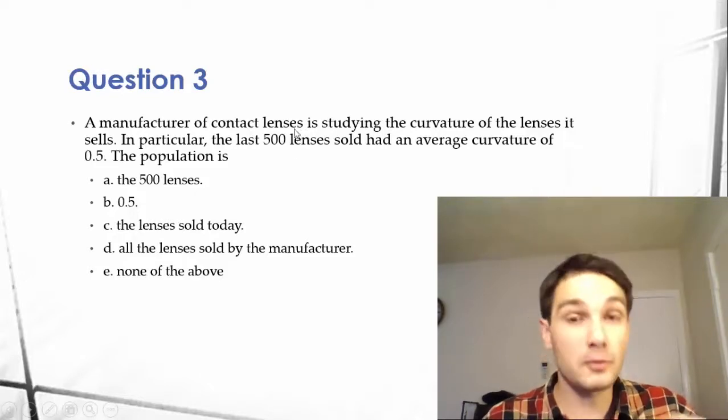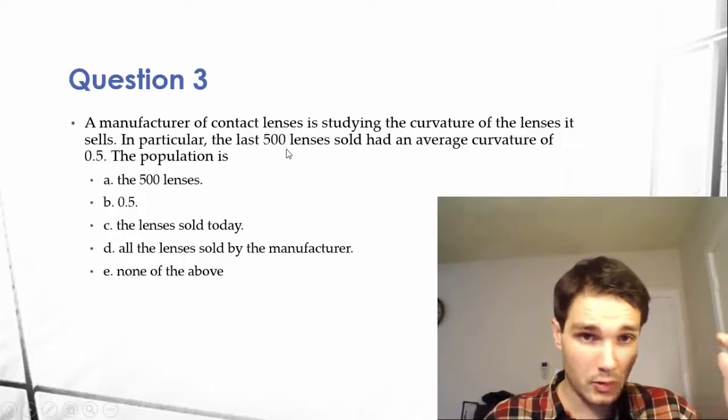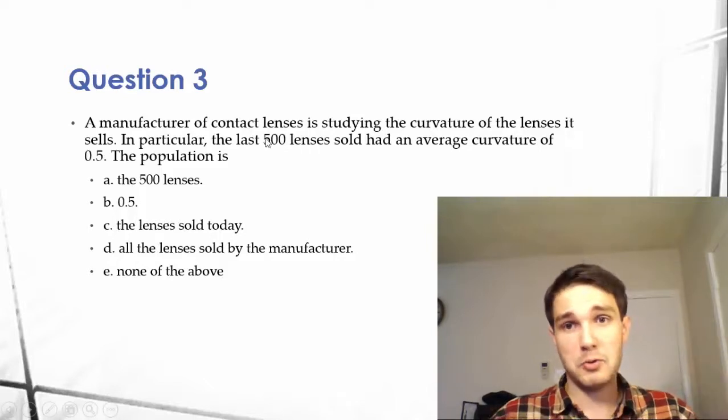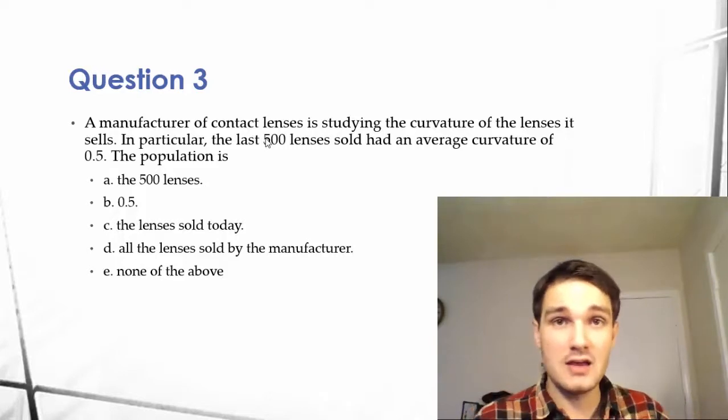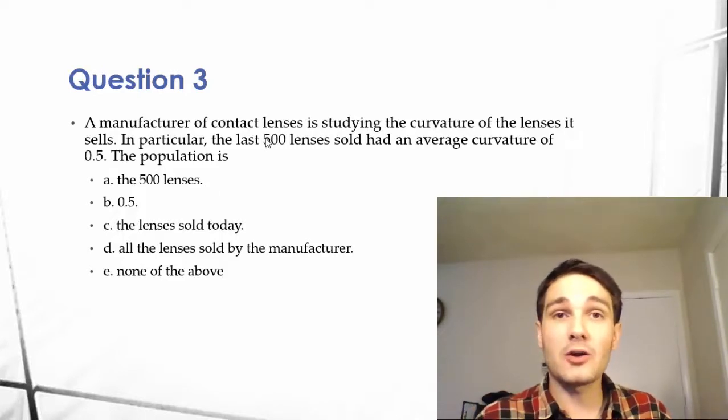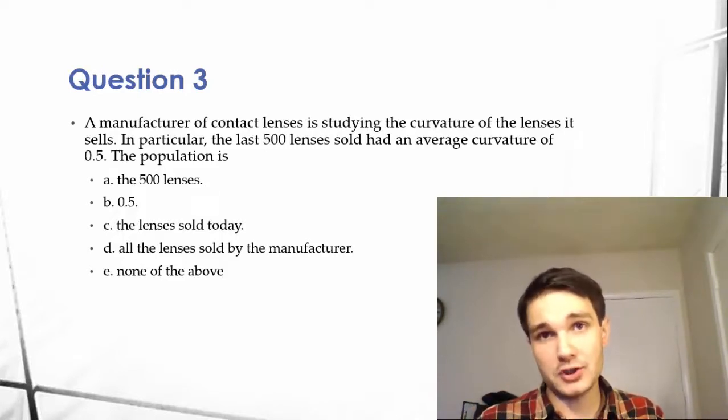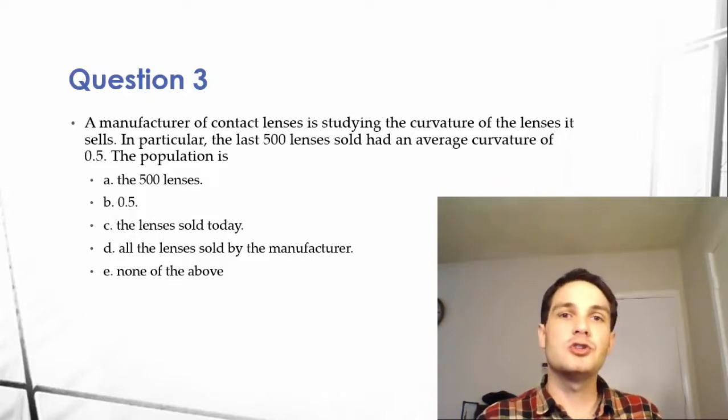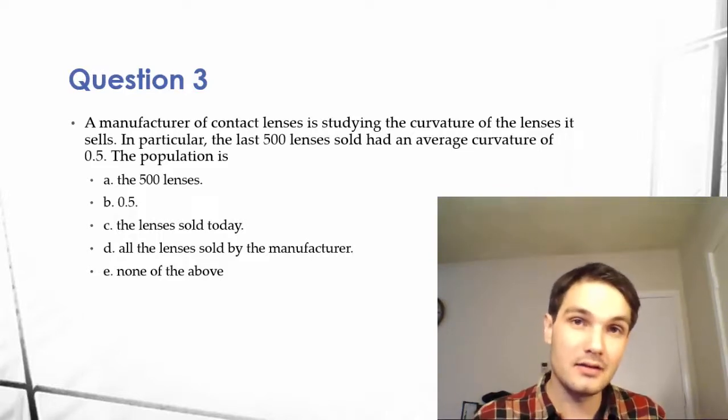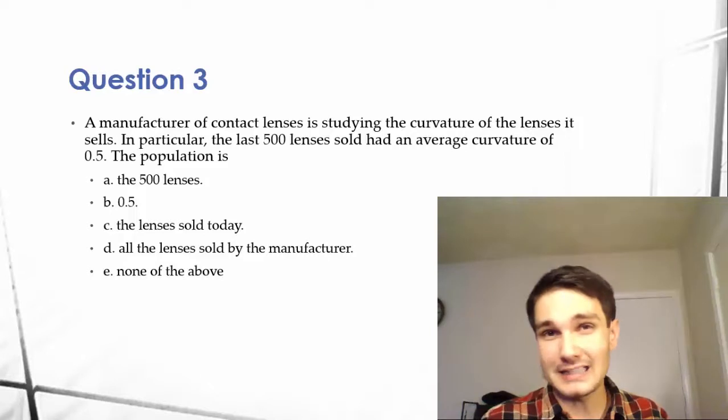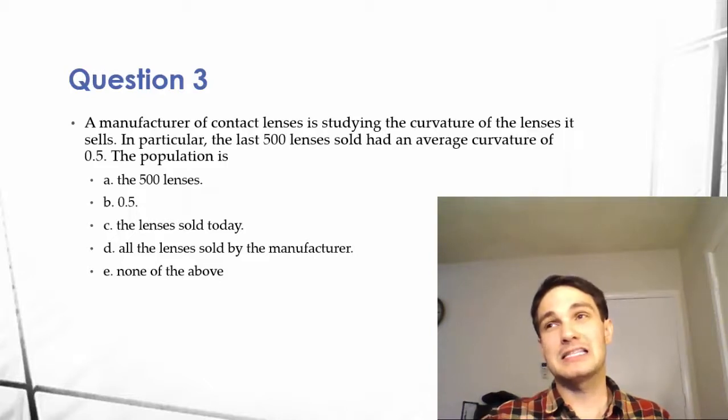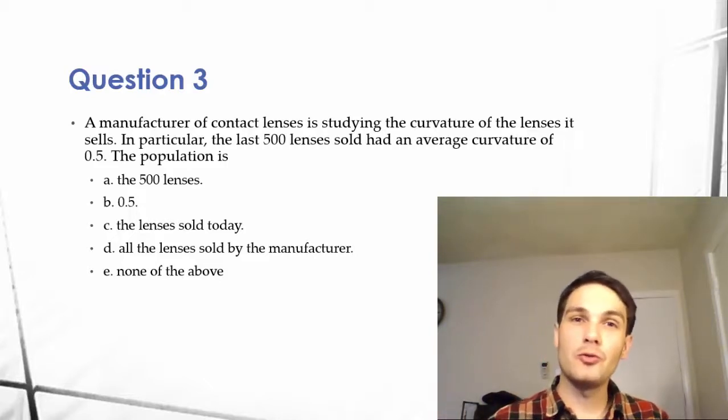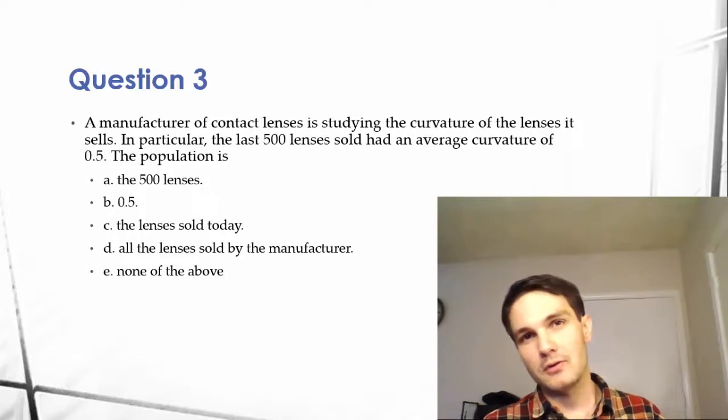Samples are pulled from populations. We take samples of populations to figure out characteristics about a certain population, because it would be impractical to test every single lens. That's one of the basic theories of statistics - we use sampling in order to make decisions and figure out things about the population.